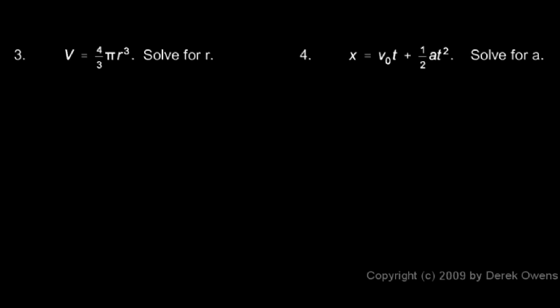In problem three, I'm given the formula V equals four-thirds pi r cubed, and I'm told to solve for r.